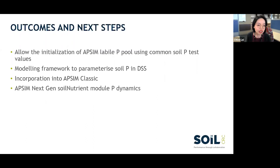We conducted cross-validation using five-fold cross-validation — each time one-fifth of the profiles were removed from calibration, the relationship was fitted with the remaining profiles, and the derived model predicted for the left-out one-fifth. All relations showed an R-squared and concordance value above 0.87, meaning our relationship is quite good at translating Colwell P values to labile P values in APSIM. This essentially allows initialization of APSIM's labile P pool using common soil phosphorus test values. We're working to incorporate this into the APSIM Classic UI for the soil types and tests covered, and will incorporate it into APSIM NextGen in later stages.